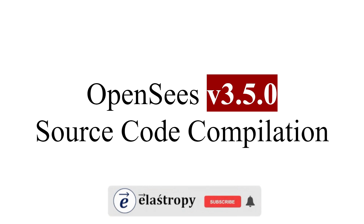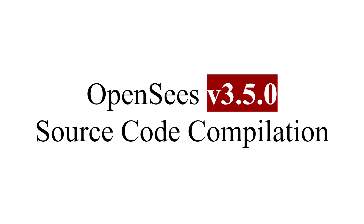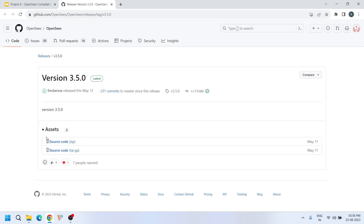Hi, welcome everyone. Today we are going to learn the entire process of compiling the OpenSYS source code on a Windows machine. In this tutorial, we will be using OpenSYS version 3.5.0. This is the one that we are going to compile today.